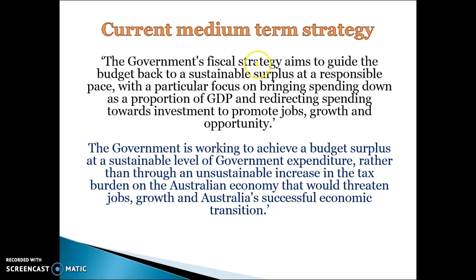The government's fiscal strategy aims to guide the budget back to a sustainable surplus at a responsible pace, which basically means they want to get back to surplus but don't want to do it too quickly. They want to bring their spending down to a small proportion of GDP and redirect spending towards areas that will promote investment and jobs, shifting to areas that boost productive capacity without increasing the tax burden.